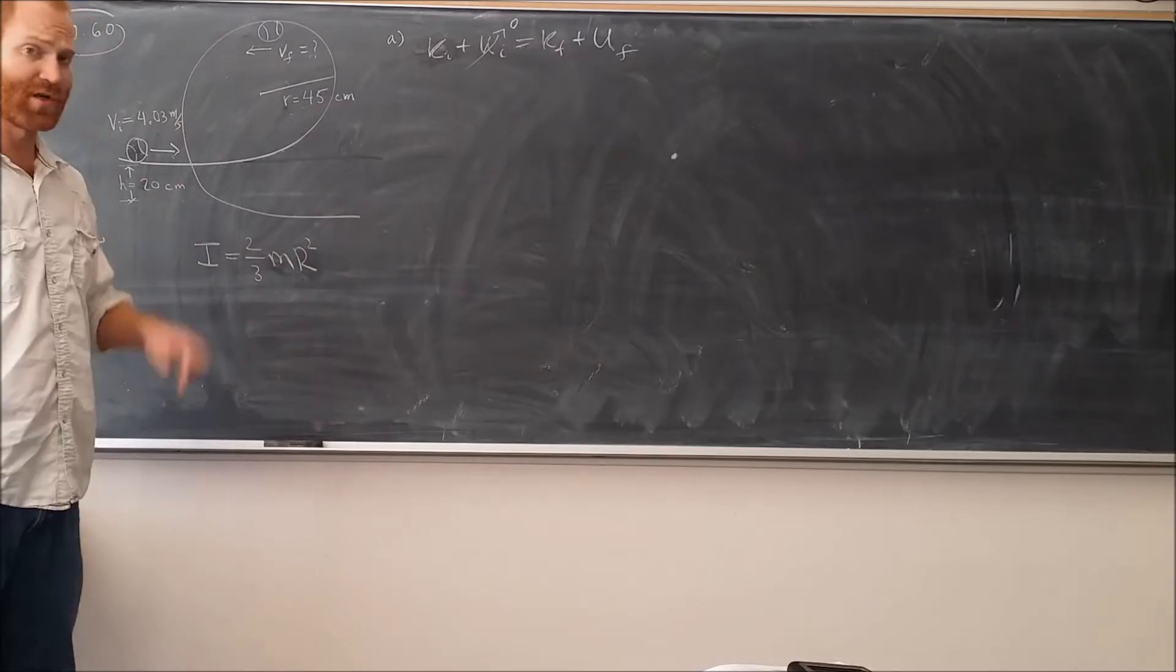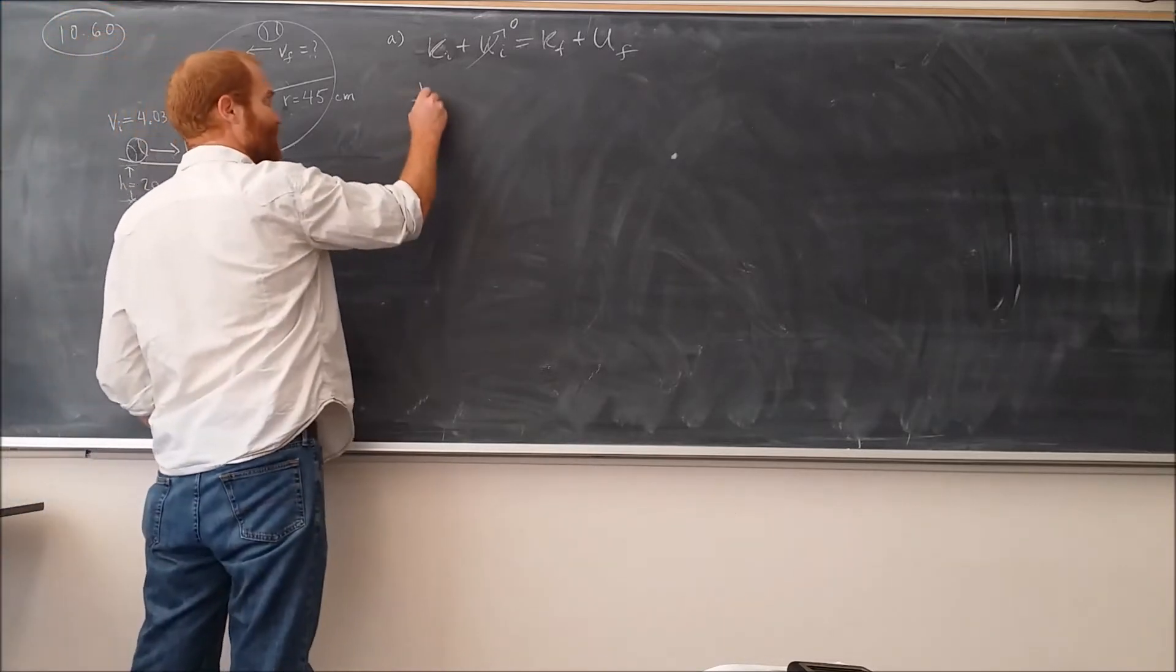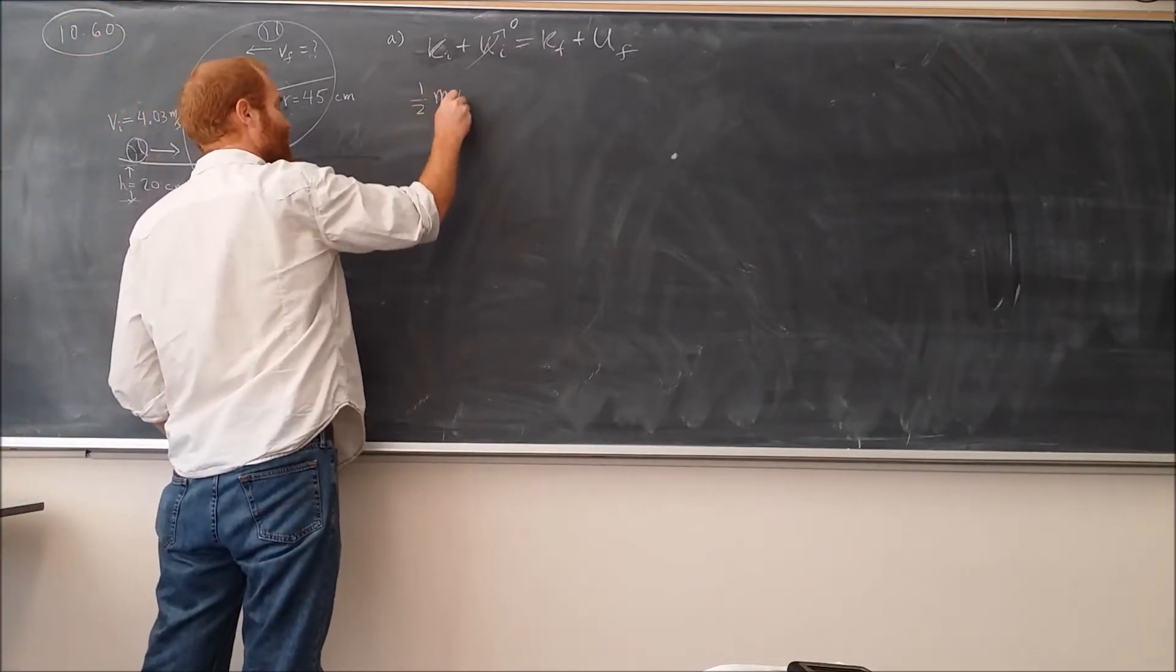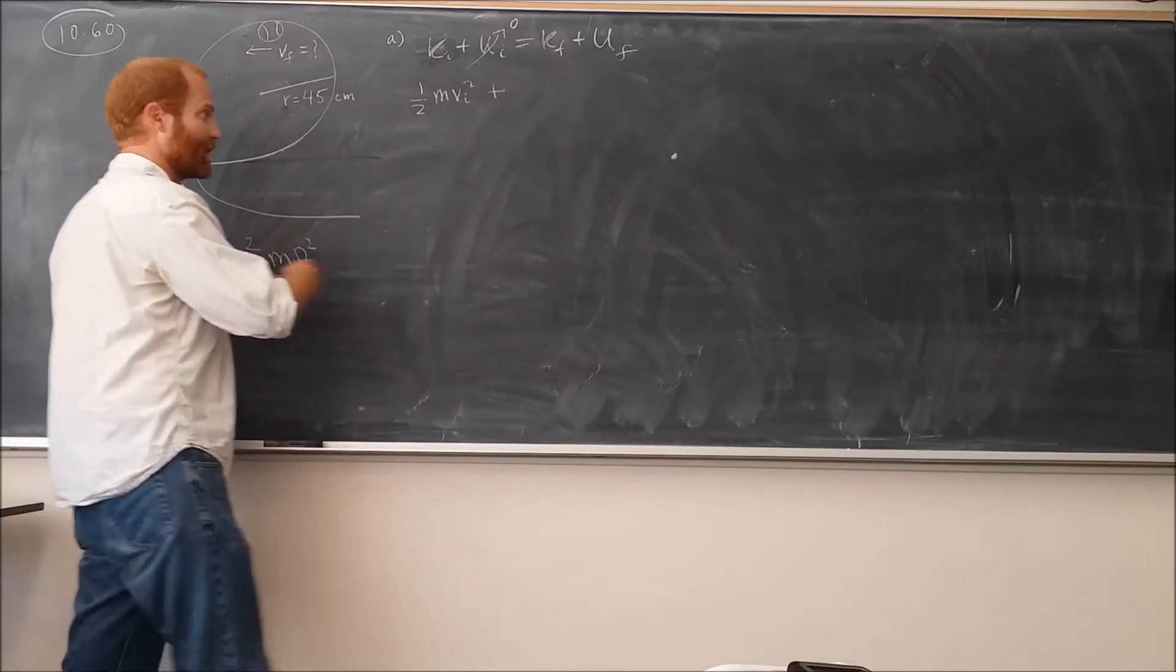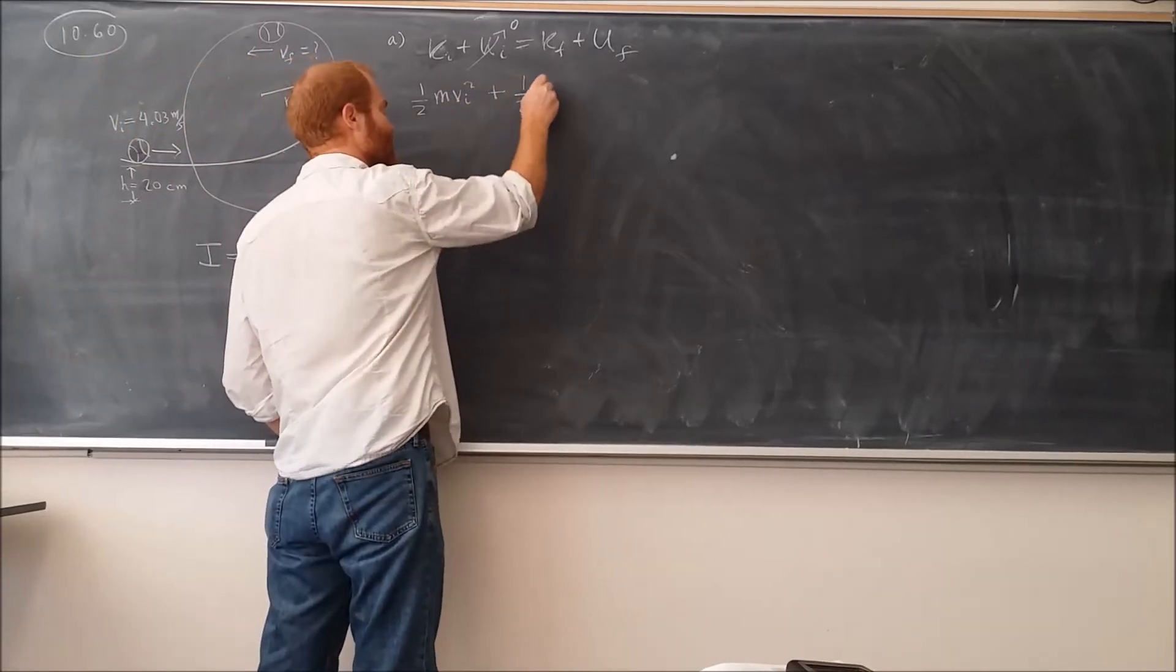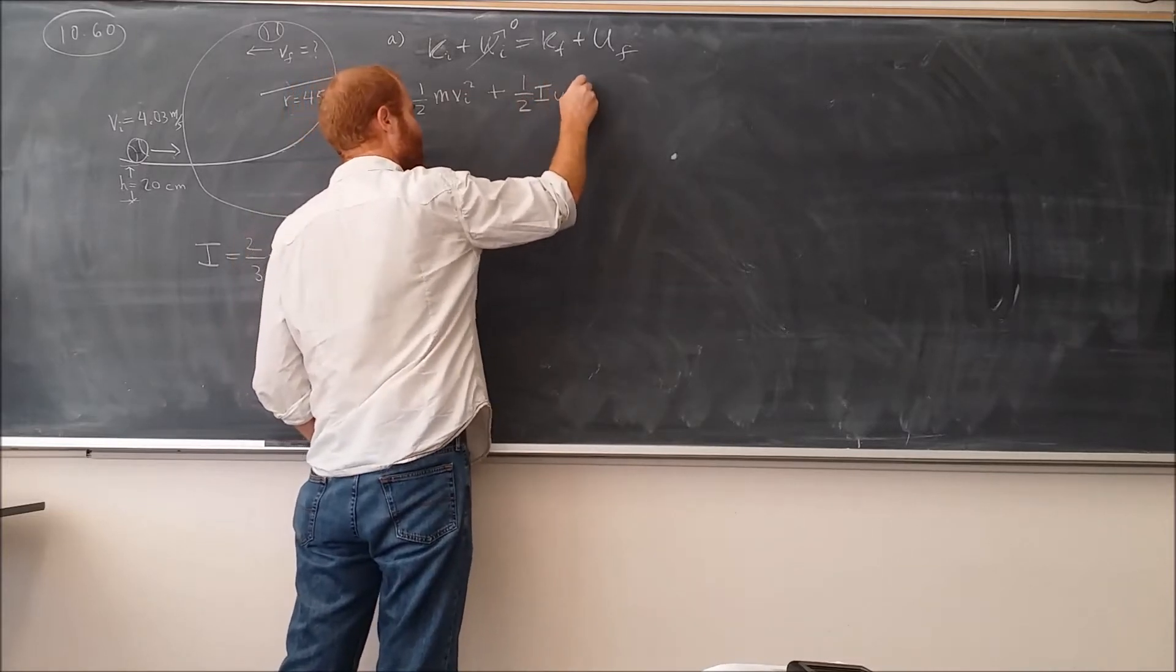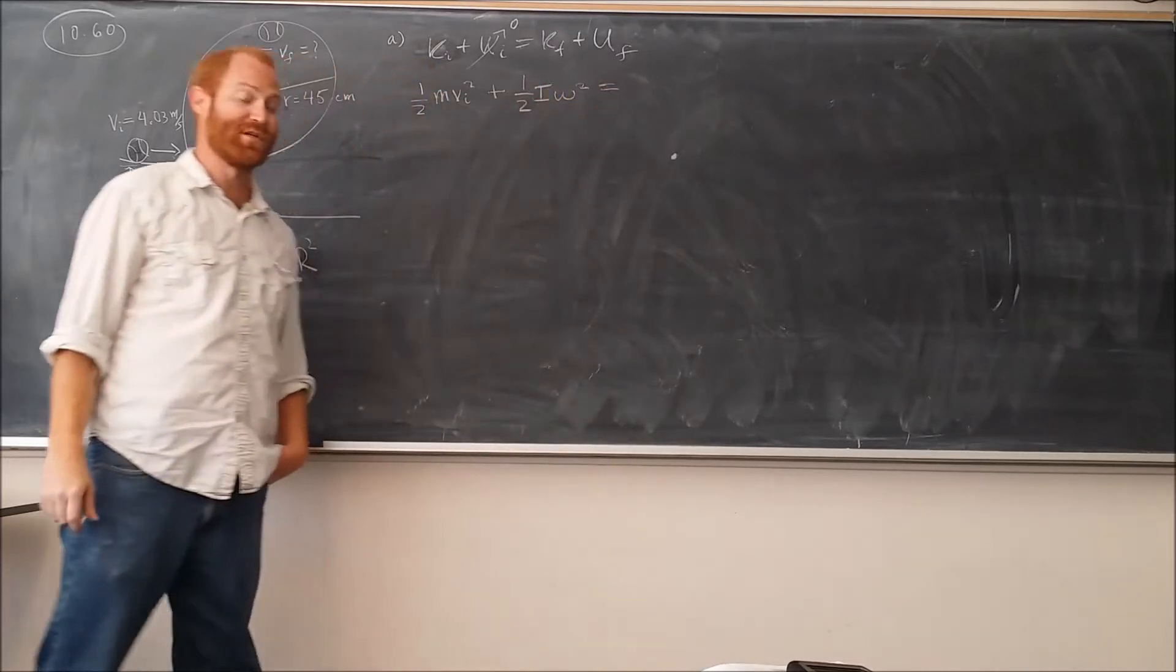If that's the moment of inertia, its initial kinetic energy is going to be given by a translational kinetic energy, 1/2 m times the initial velocity squared, plus rotational energy. That's all the energy it has to start with.